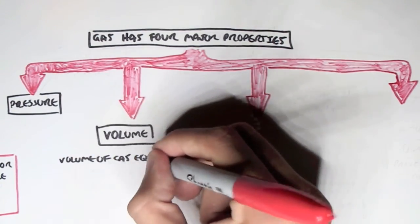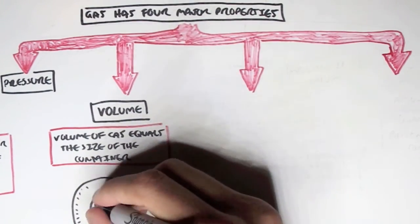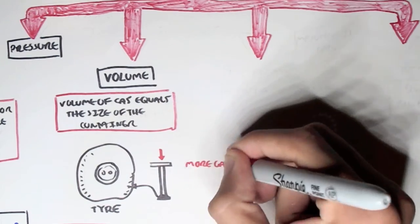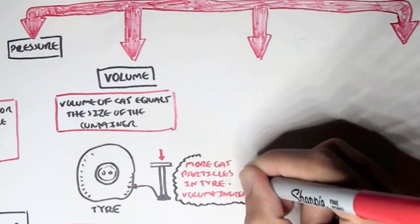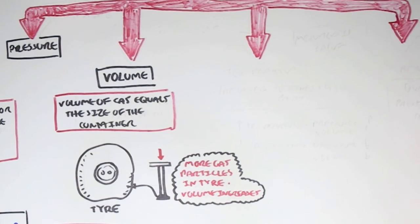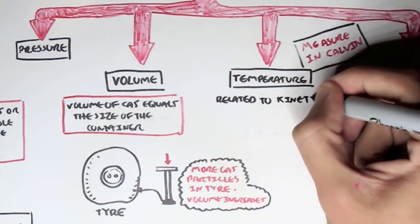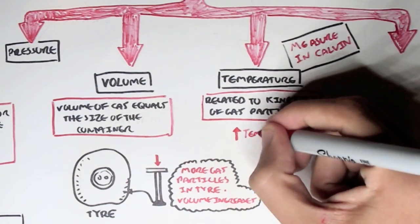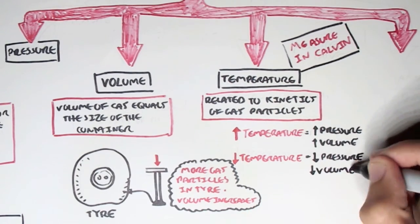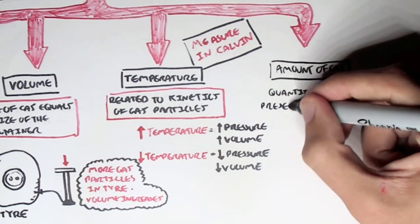Another property gas has is volume. The volume of gas equals the size of the container. For example, if we had a flat tire and we want to pump it up, if we push this pump, more gas particles will go into the tire, which will increase the volume. So pressure and volume are related. Another property gas has is temperature, which is usually measured in Kelvin. Temperature is related to the kinetics of the gas particles — an increase in temperature will increase the pressure and volume, and a decrease in temperature will decrease the pressure and volume. And the last property of gas is the amount of gas, which is essentially the quantity of gas present in a container.